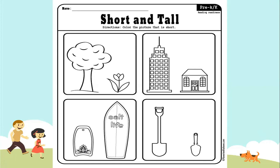Color the picture that is short. Colorea la imagen que es bajita. Por aquí tenemos un árbol y una flor. A tree and a flower. Which is short? Excellent. The flower. Entonces tienes que colorear la florcita. You have to color the flower.